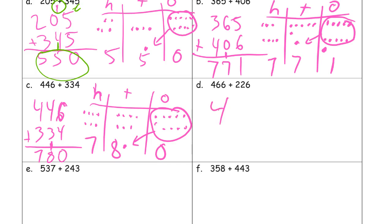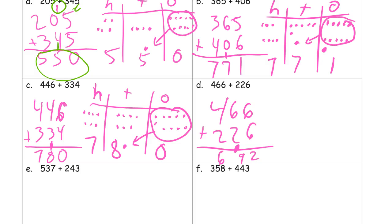Four hundred sixty-six plus two hundred twenty-six. Six plus six is twelve — compose a ten. Six plus two is eight, one more is nine. And then add our hundreds: four plus two is six.